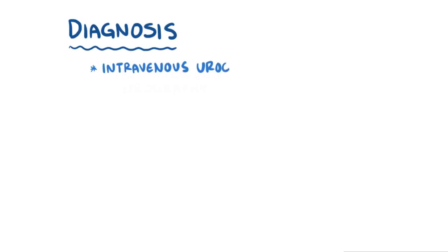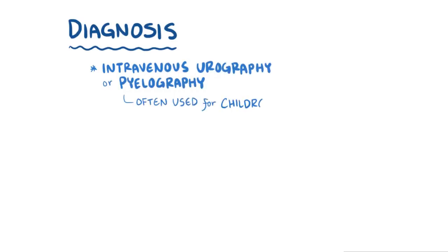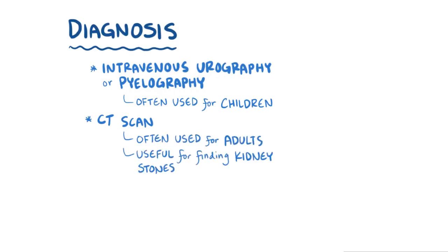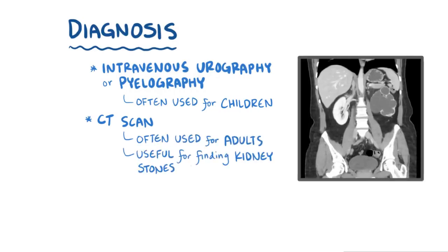In children, intravenous urography or pyelography is also commonly used to assess for congenital pelvic ureteric junction obstruction. In adults, a CT scan is commonly done because it can be helpful in identifying kidney stones, which is the most common underlying cause of hydronephrosis.